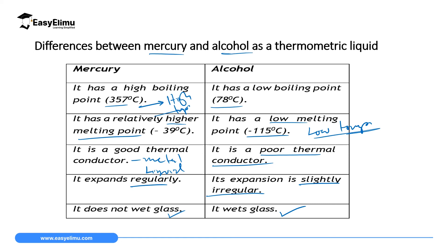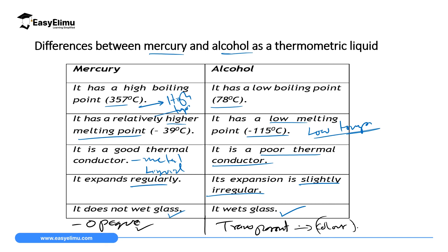Another important point is that mercury is opaque, meaning you can see it easily — it is visible. Alcohol is transparent, so for you to use it you must add a color to it so that you can see it inside the thermometer.